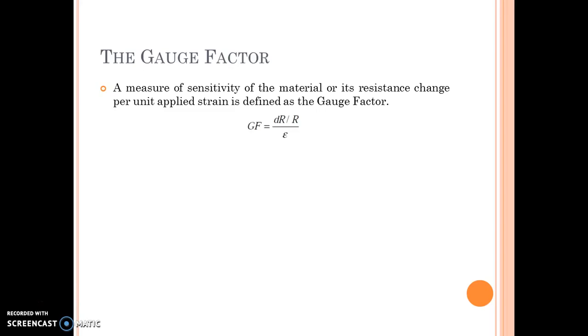In terms of a formula, gauge factor is equal to change in resistance per original resistance divided by strain. So before applying any strain, if the resistance of the conductor was capital R, and now there is a small change in resistance called dR, this is the change in resistance per unit original resistance, and this is the applied strain.